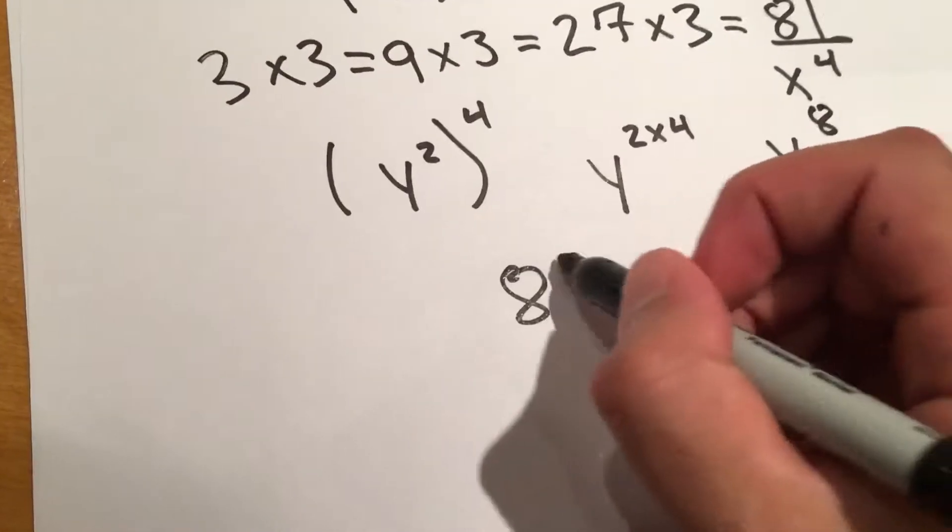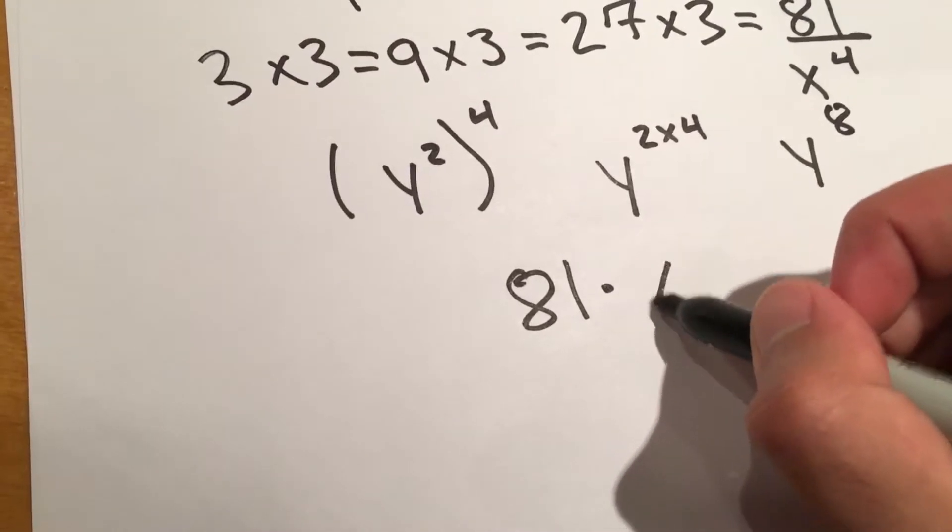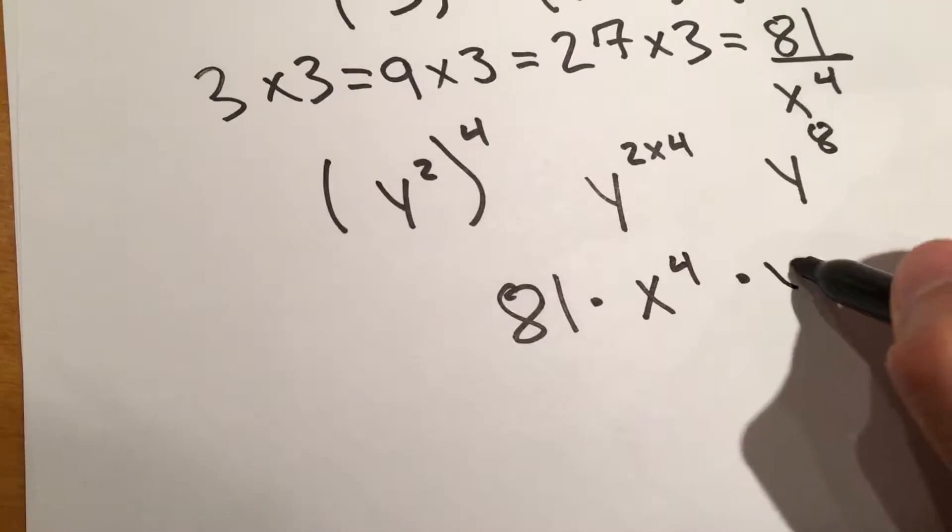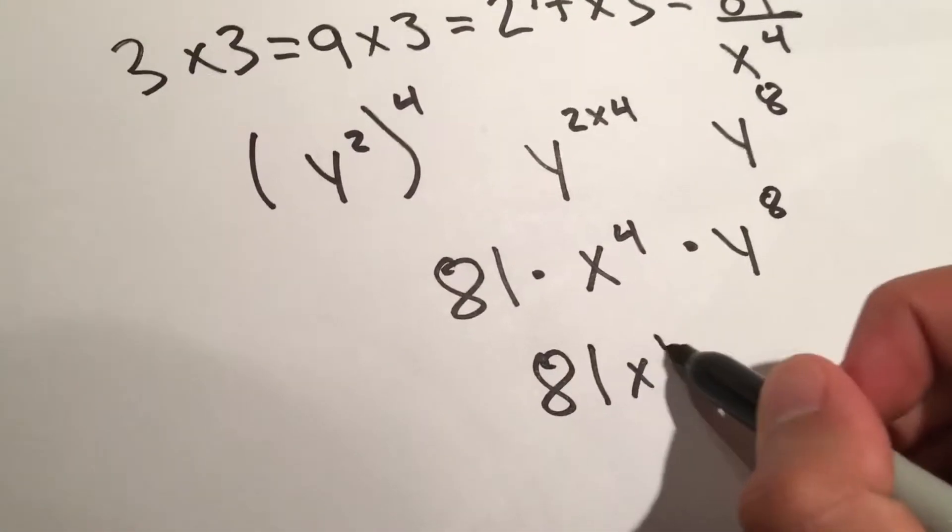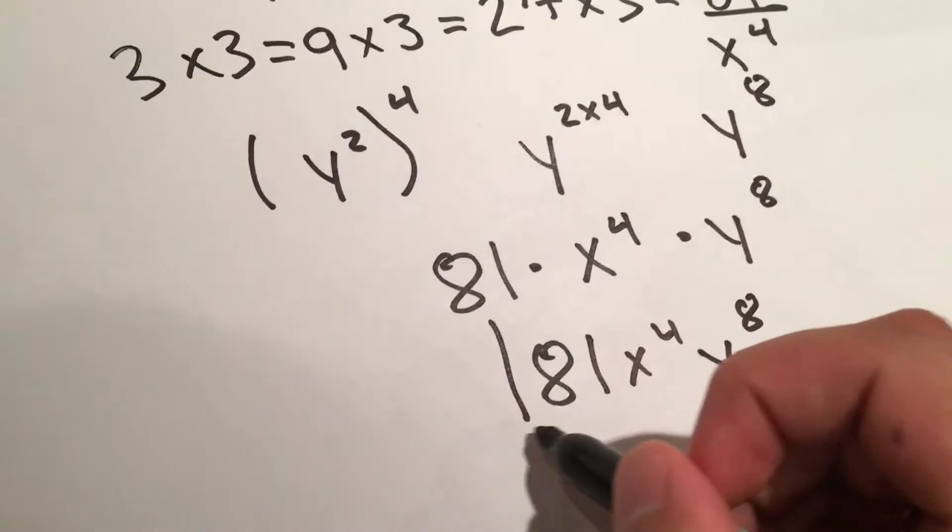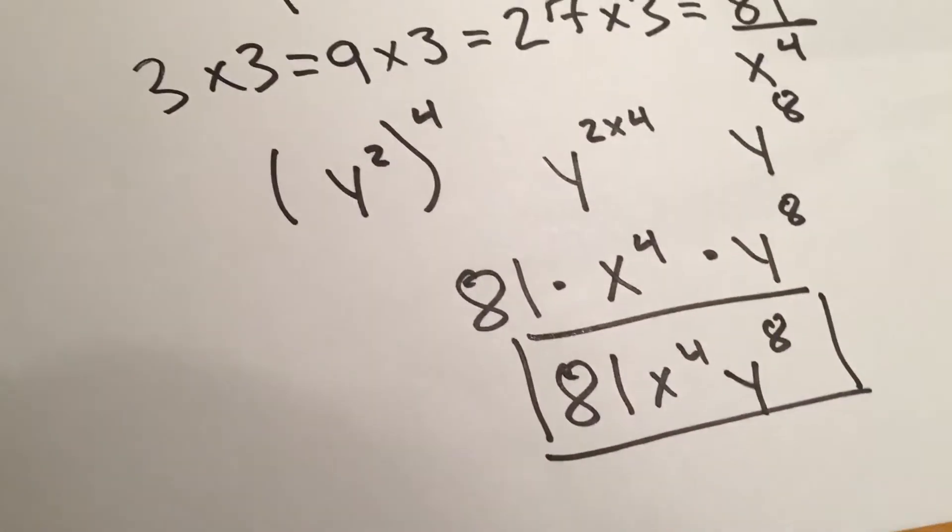So it's going to be 81 times x to the 4th times y to the 8th, and that is just 81x to the 4th y to the 8th. Final answer.